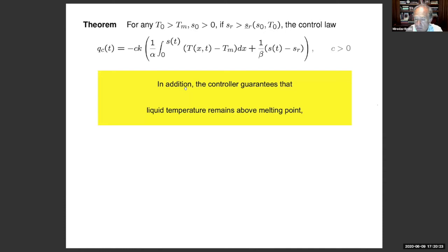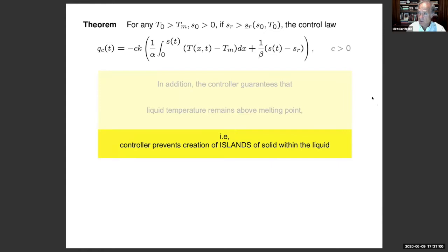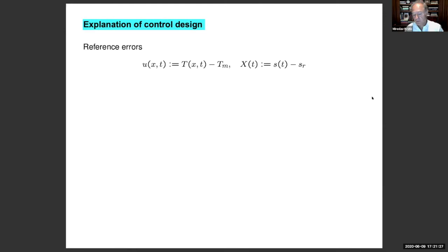Now in addition to stability, the controller has an additional task of not violating physics and the controller fulfills this task. In other words, this control law guarantees that the liquid temperature remains above the melting point. It sounds like a trivial statement. It's not trivial to establish. It takes an argument through the maximum principle. And it takes establishing that this heat flux will always be positive. The controller will never try to cool. If one were to fail at guaranteeing that there is stability but the temperature doesn't remain above TM all the time, you would actually be allowing the creation of islands of solid within the liquid that the model would no longer be valid as a one-phase Stefan model.